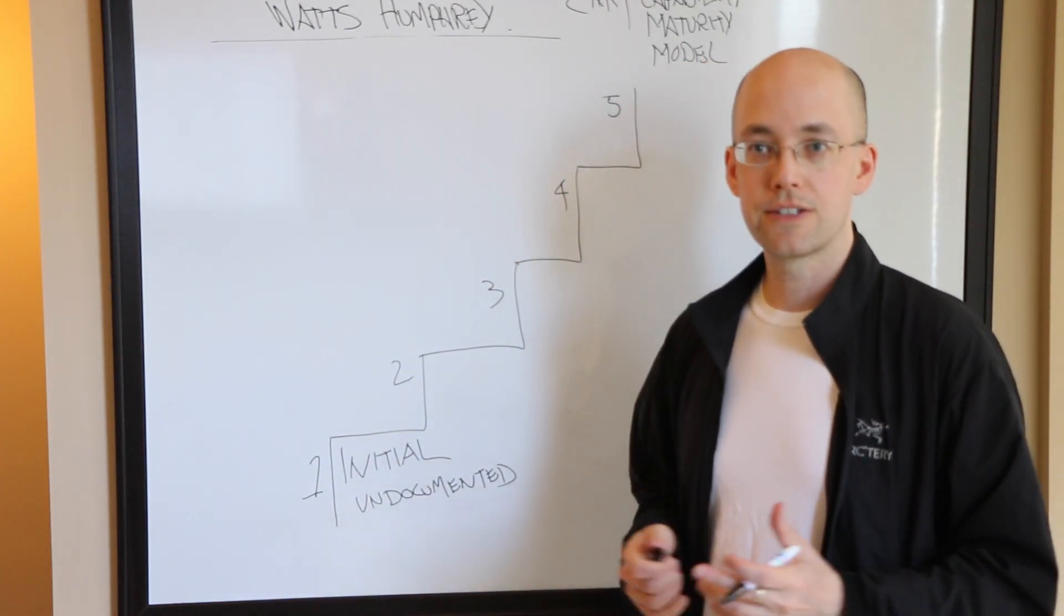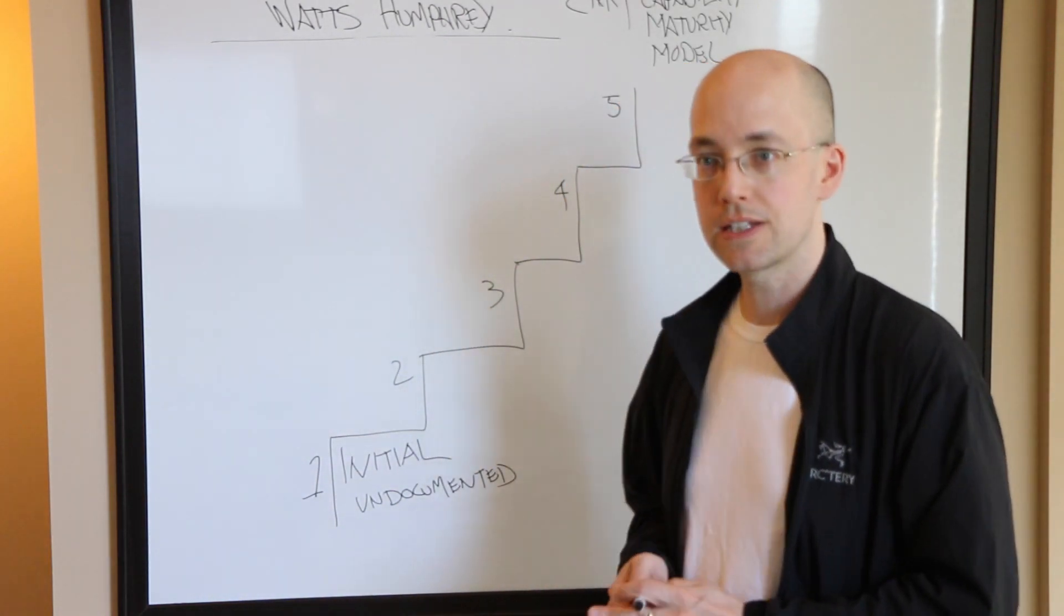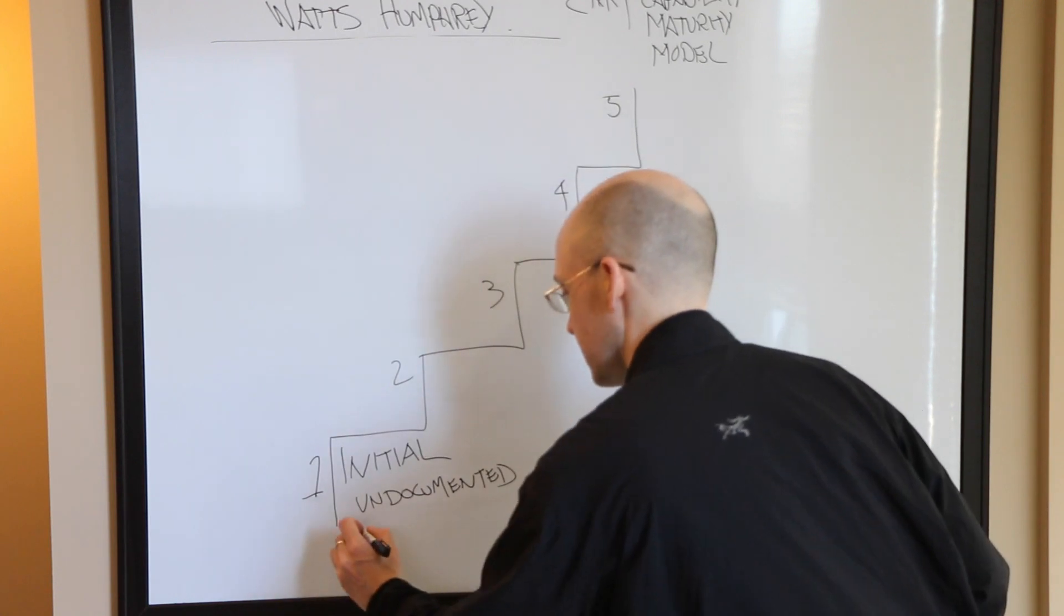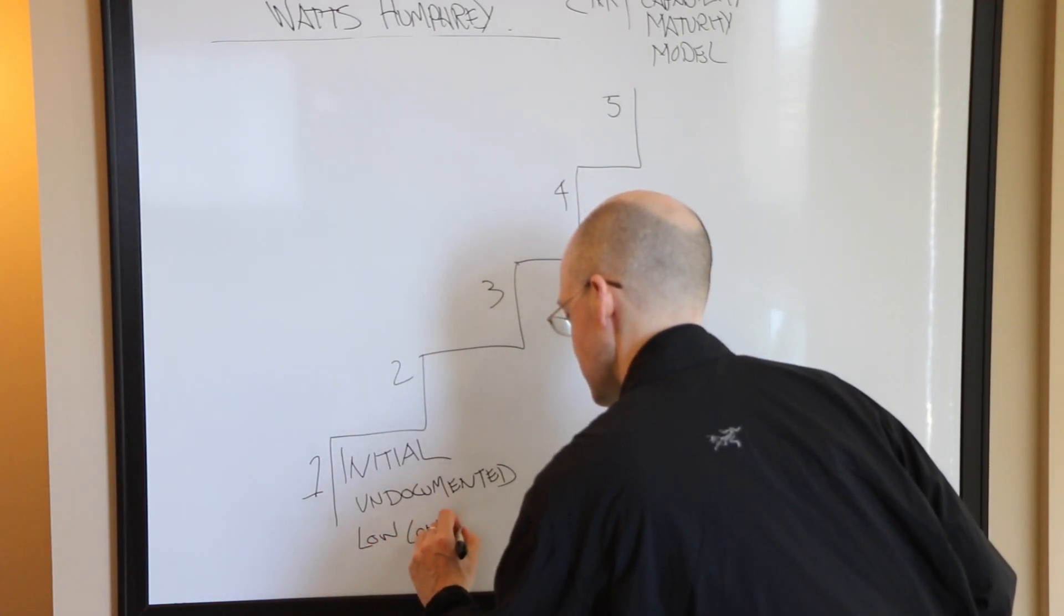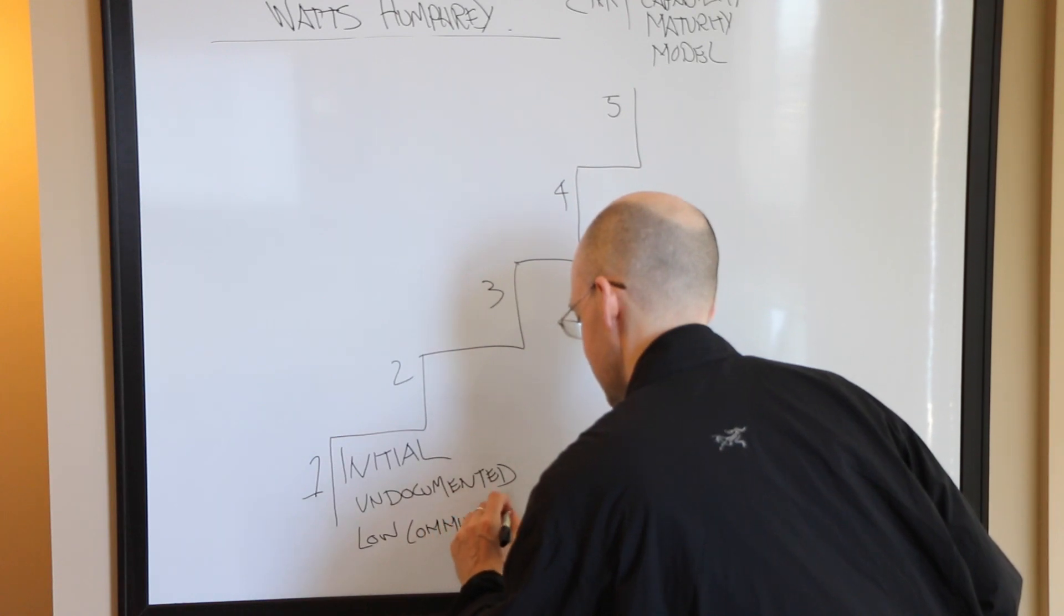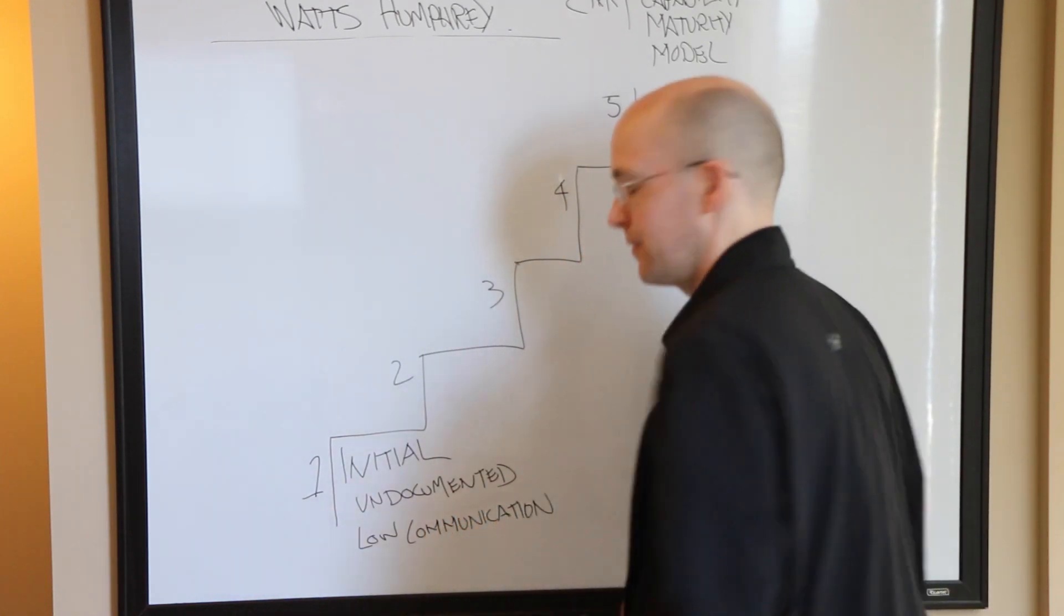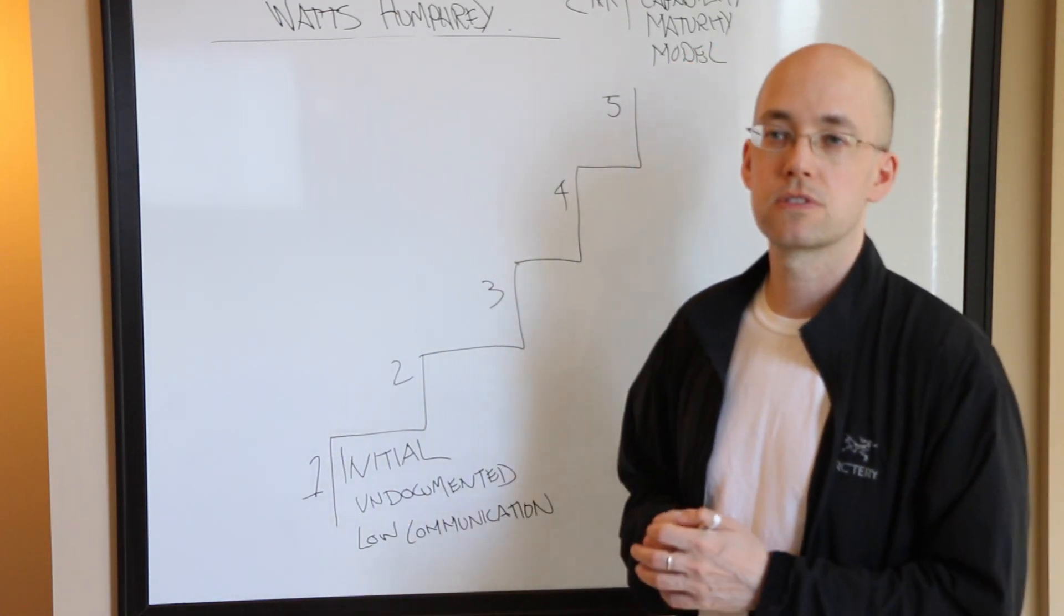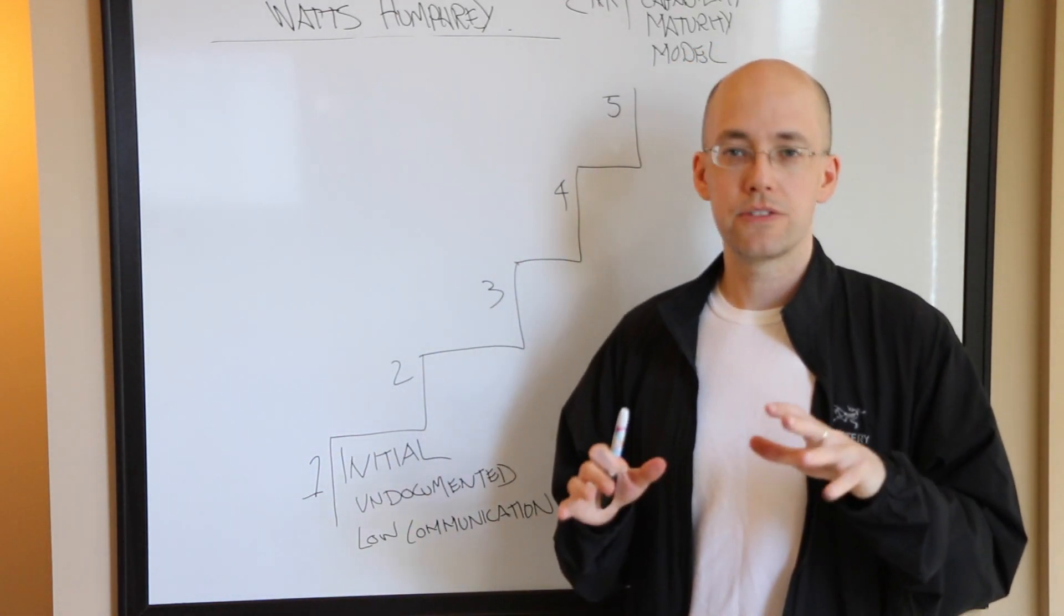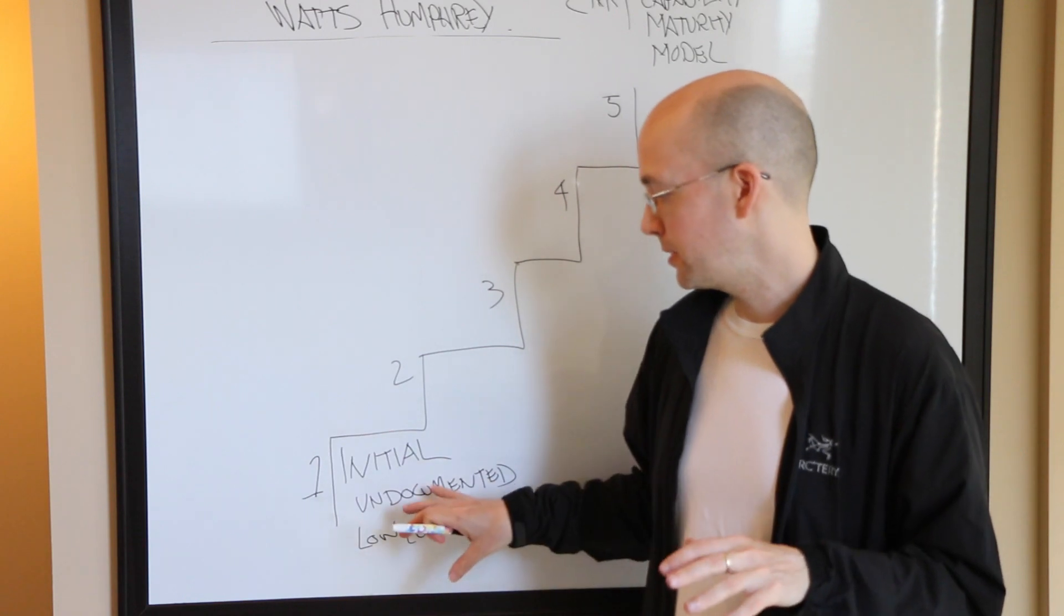But typically what happens is at Level 1, initial, it's chaotic. A lot of the processes are undocumented. Functional areas tend to do their own thing. Communication is low.